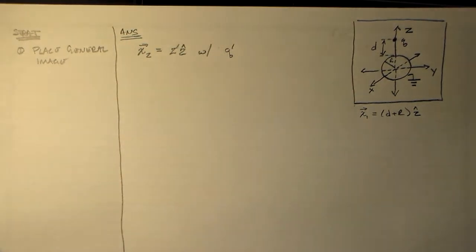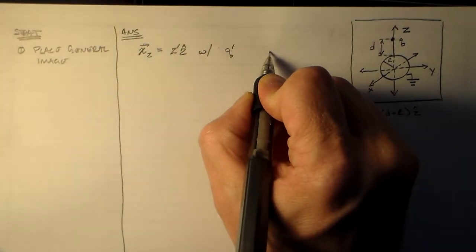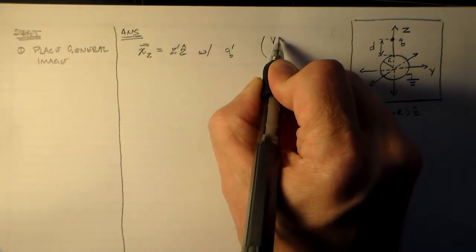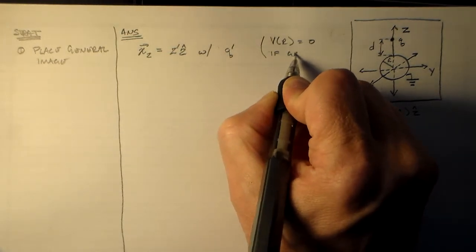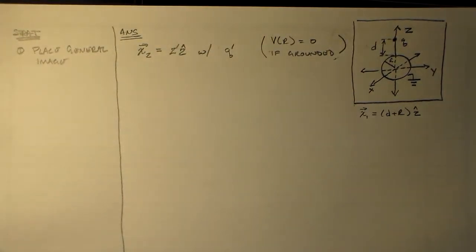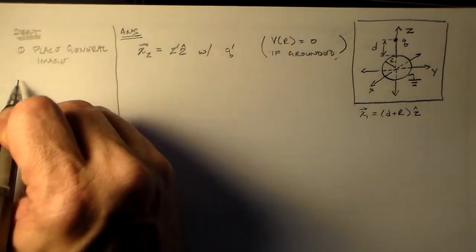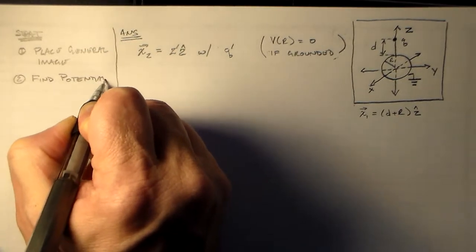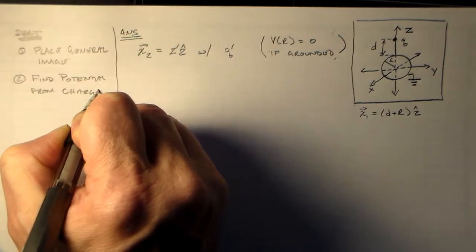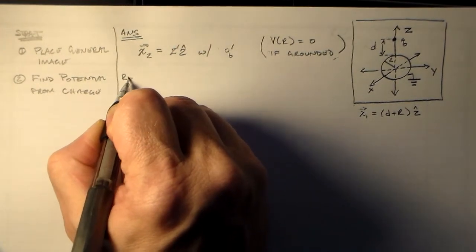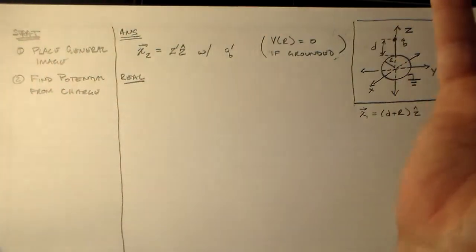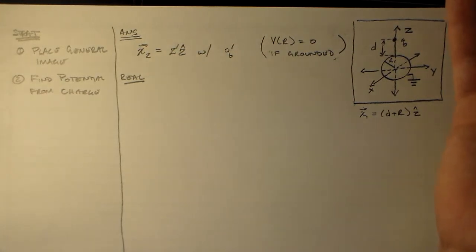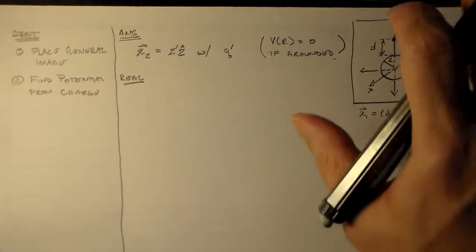Now remember x1, the position of q, was equal to d plus r. So now that we've got that, we can start trying to solve for these things. So now the condition that we use is the potential at r equals zero if you have a grounded sphere. So using that condition, using this physical condition here, that's how we're going to find z prime and q prime. That means we have to find our potential.